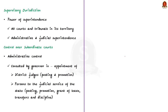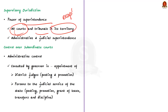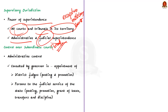Under supervisory jurisdiction, a High Court has the power of superintendence over all courts and tribunals functioning within its territorial jurisdiction, except military courts. This power is very broad because it extends to all courts and tribunals whether or not they are subject to the appellate jurisdiction of the High Court, and it covers not only administrative superintendence but also judicial superintendence.